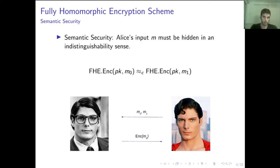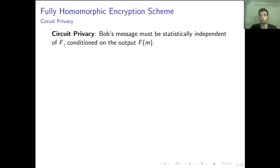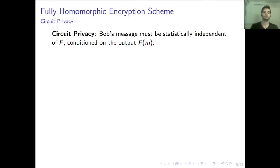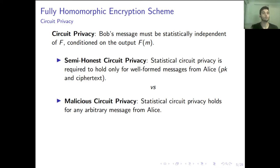Apart from security for Alice, or the client, we also want security for Bob, which comes in the form of circuit privacy. That means we want the client or Alice to not get any information about the server's circuit or function used for the computation. When talking about circuit privacy, we can refer either to the weaker notion of semi-honest circuit privacy, where circuit privacy holds only for well-formed messages from Alice, or the stronger notion of malicious circuit privacy, where it holds for any arbitrary message from Alice.